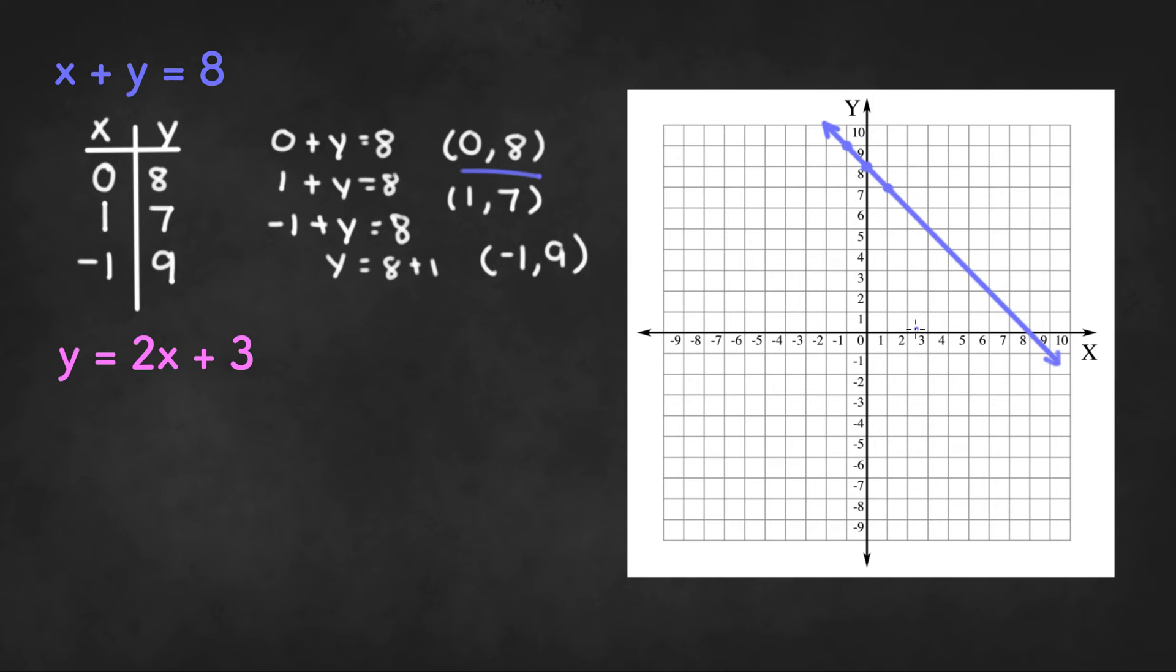For example, if we use the point 2 comma 3 and we want to plug this in, we have x equals 2 and y equals 3. So 2 plus 3 will not be equal to 8. It will be equal to 5. So that cannot be a solution to the equation.